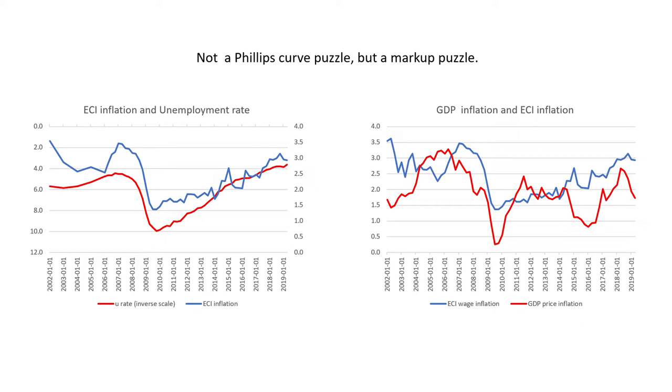People have talked about the low pass-through. It's true, but there is much more than that. There is a lot of variation in the price index which is not coming from the cost index. So there are these two dimensions.